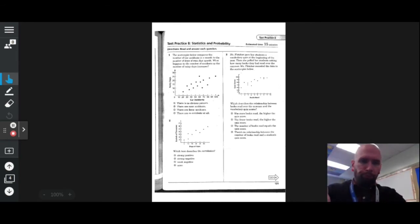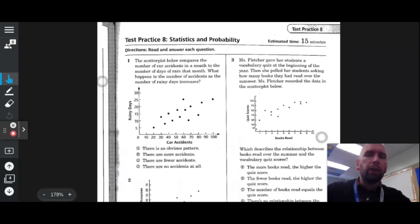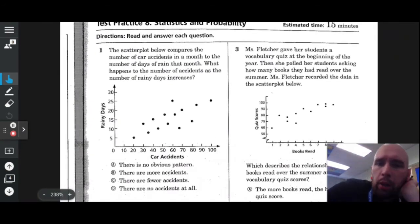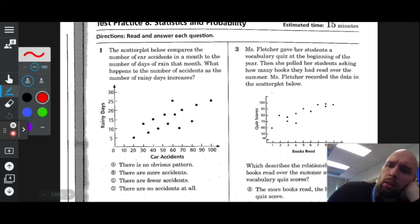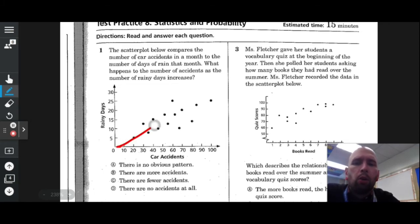The scatter plot below compares the number of car accidents in a month to the number of days of rain that month. What happens to the number of accidents as the number of rainy days increases? Without looking at the multiple choices, it looks like we have a positive correlation. It goes that way.